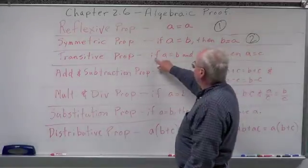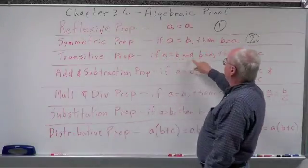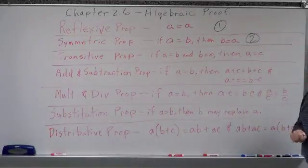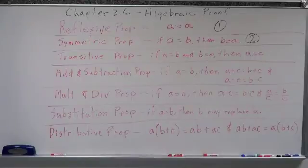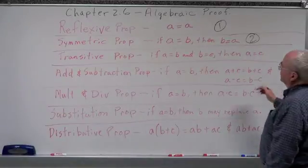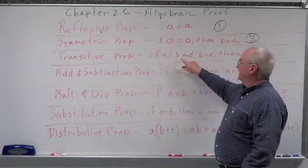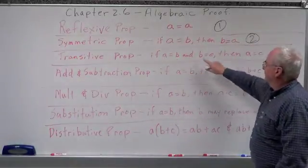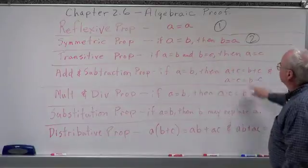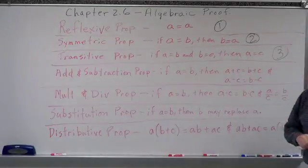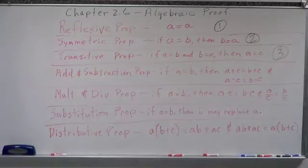If Sue and Sally are identical twins, then Sue looks like Sally and Sally looks like Sue. Transitive property: if A equals B and B equals C, then A equals C. I call that the Sue, Sally, and Alice — three identical triplets — property.